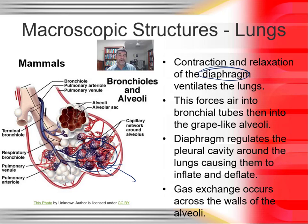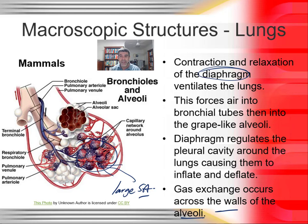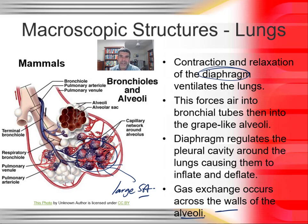Gas exchange occurs across the walls of the alveoli — large surface area, rich blood supply, thin membranes, and moist surfaces facilitate all the key requirements of respiratory systems. This has been a sideline on gas exchange looking at both plants and animals, breaking up our study of plant structure and function. In the next video, we'll return to a historical look at photosynthesis and finish our study of plants before returning to animal systems in more detail. Thanks for watching.